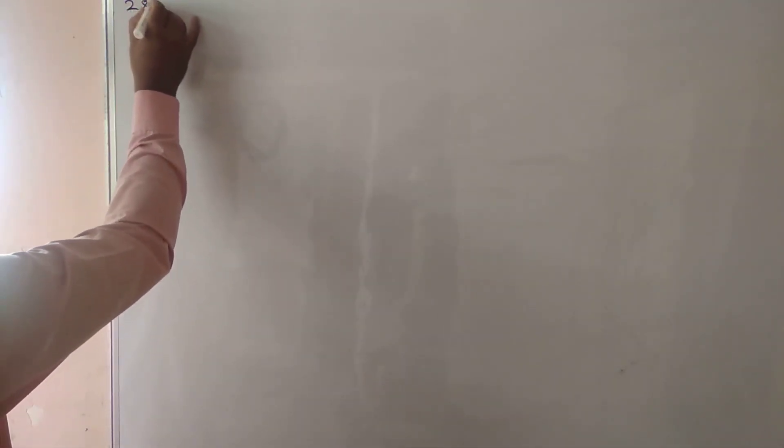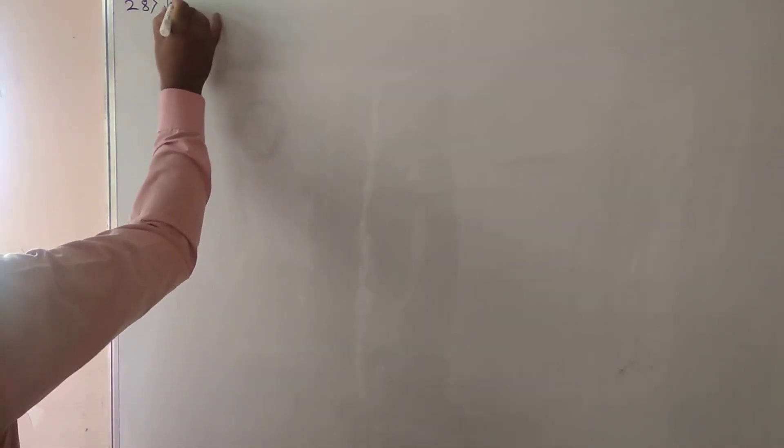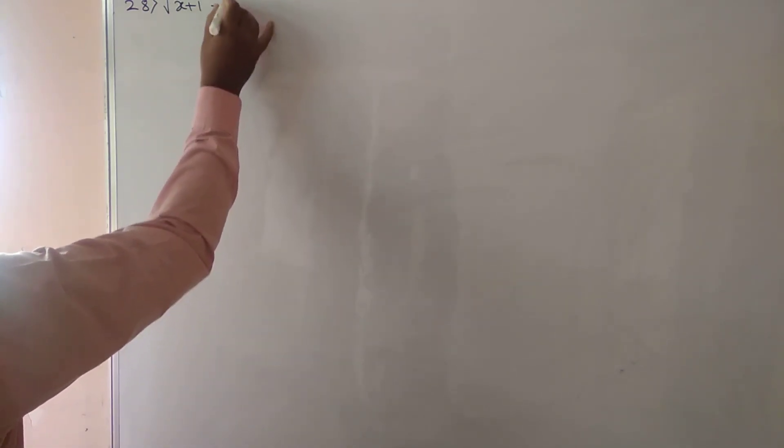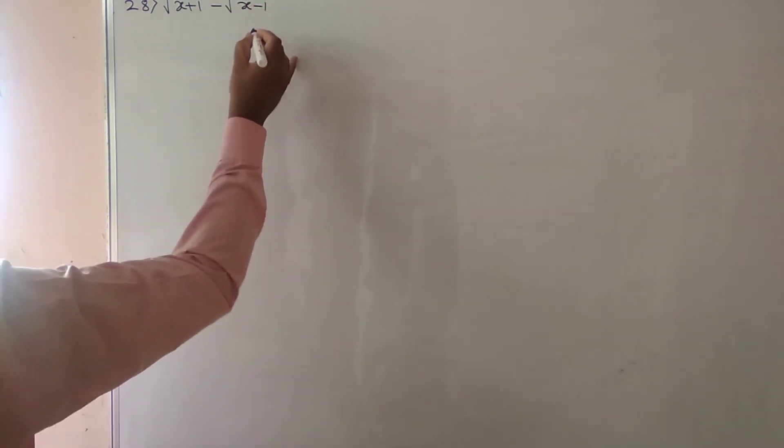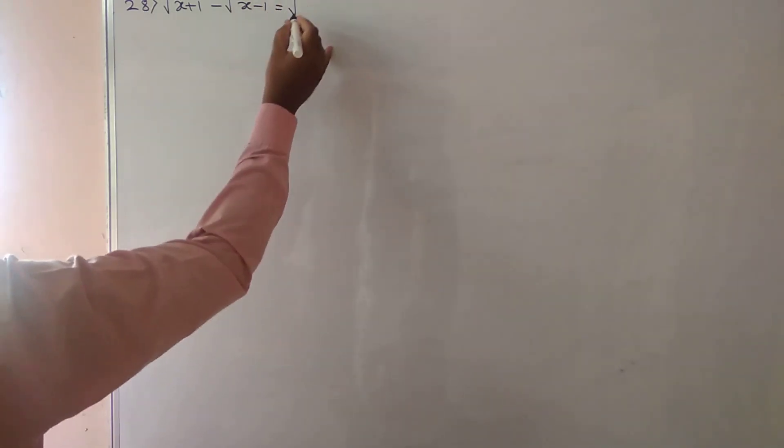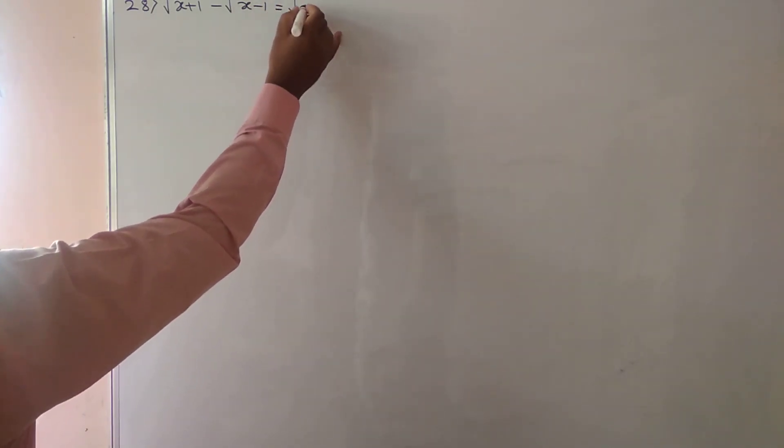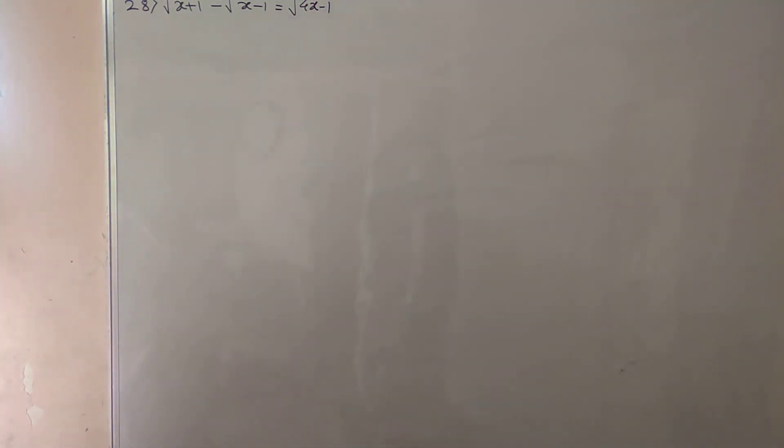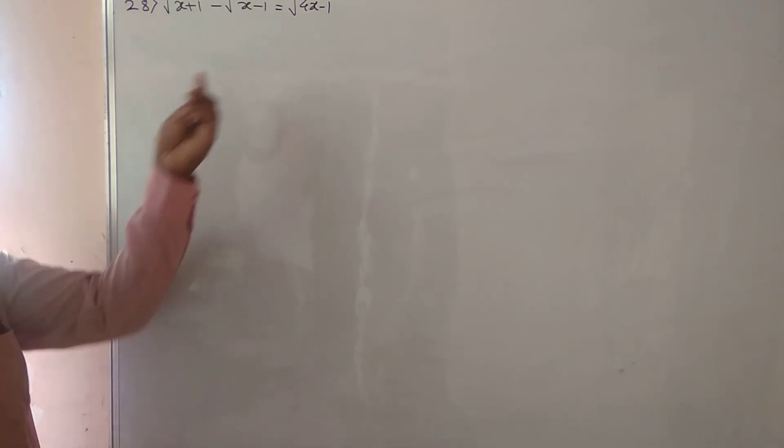There is question number 28 and it is the equation root x plus 1 minus root x minus 1 is equal to root 4x minus 1. So let us solve this question now.